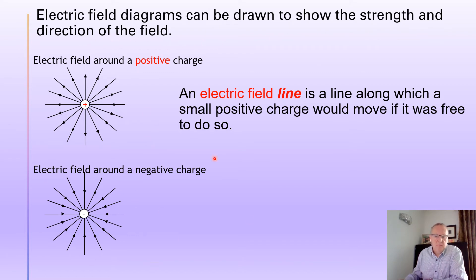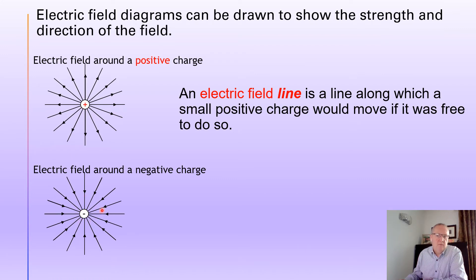We can represent an electric field by drawing an electric field diagram, and it's there to show the strength and the direction of the field. Here are two electric field diagrams — one around a positive point charge and one around a negative point charge. You can see there are lines with arrows on them; these are called electric field lines and they represent both the strength and the direction. The arrows point away from the positive charge and towards the negative charge.